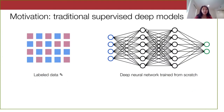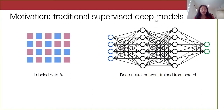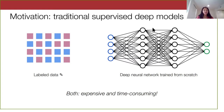To motivate our work, let's look at a traditional machine learning setup. In a supervised learning setting, we typically have a large labeled dataset and then train a deep neural network from scratch on it. The question is: what is the problem with both of these steps? In practice, acquiring labeled data can be very time consuming and expensive, and training a deep neural network from scratch is also pretty costly.